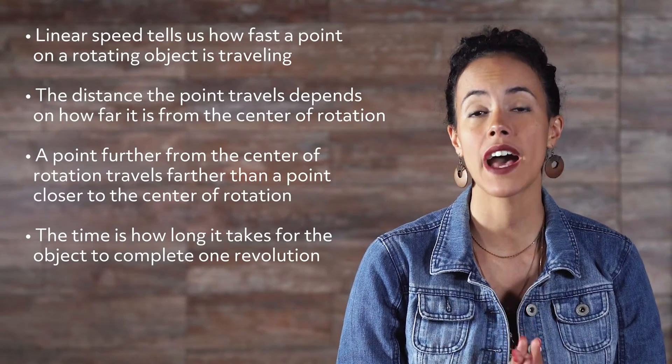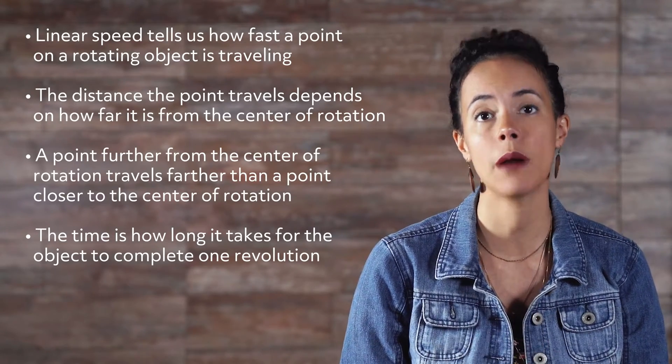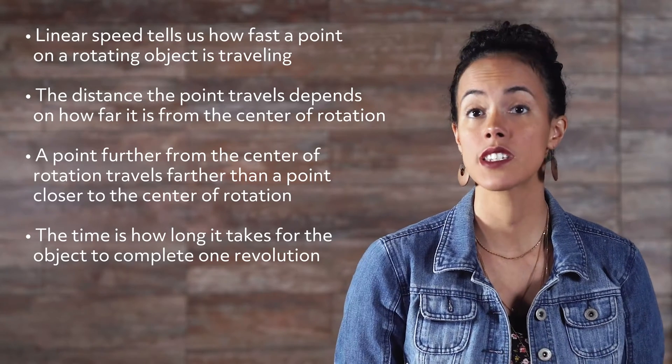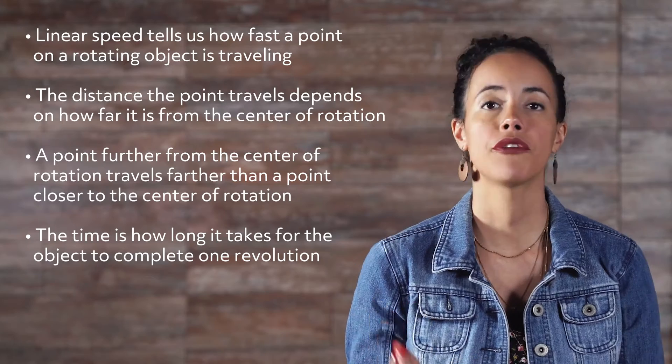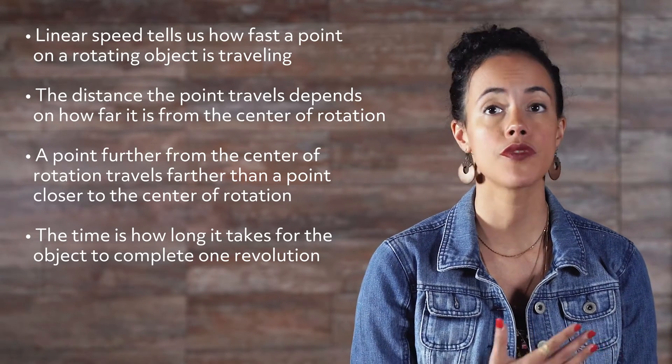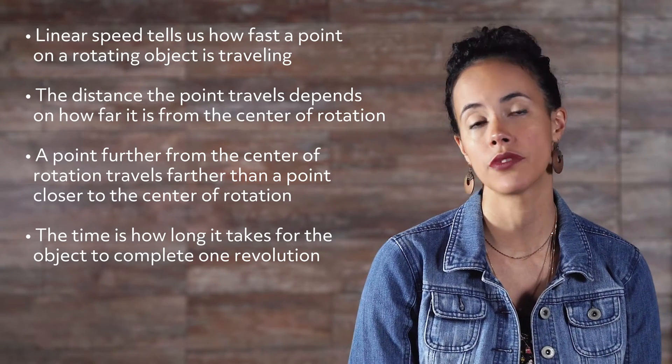Linear speed tells us how fast a point on a rotating object is traveling. The distance the point travels depends on how far it is from the center of rotation. A point further from the center of rotation travels farther than a point closer to the center of rotation.